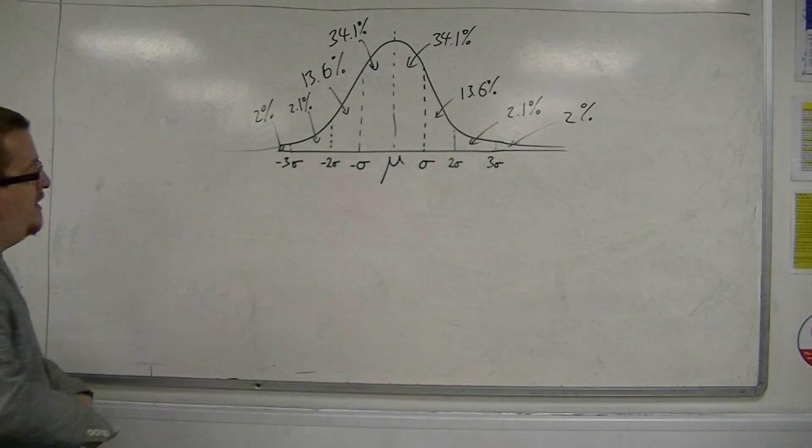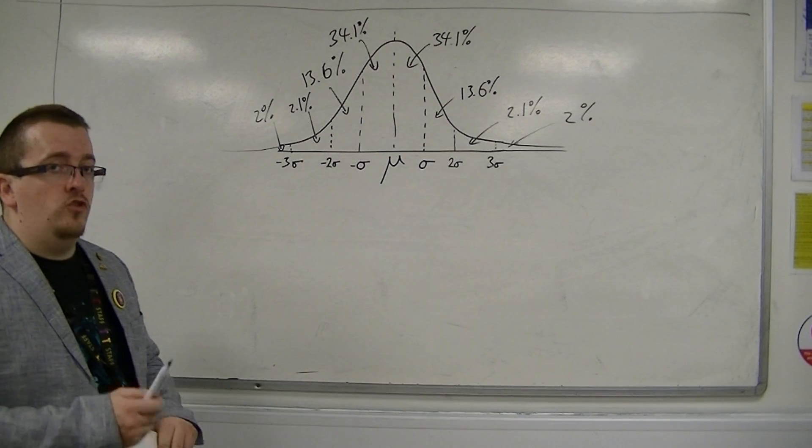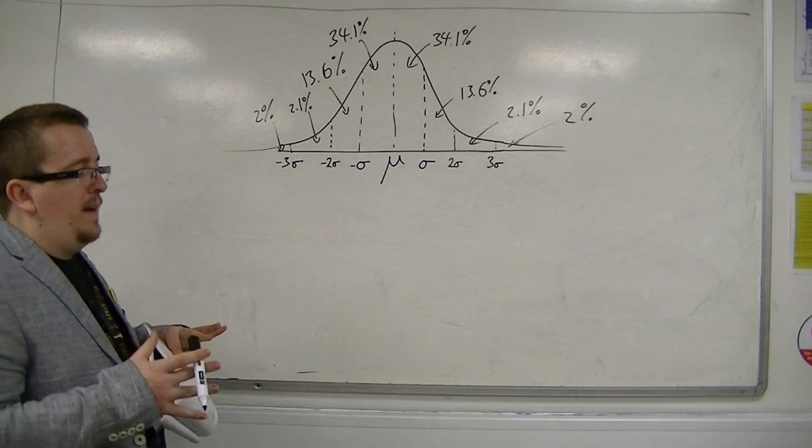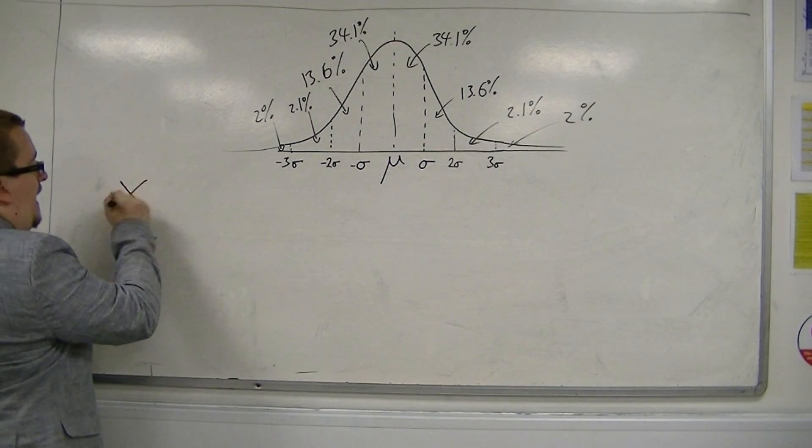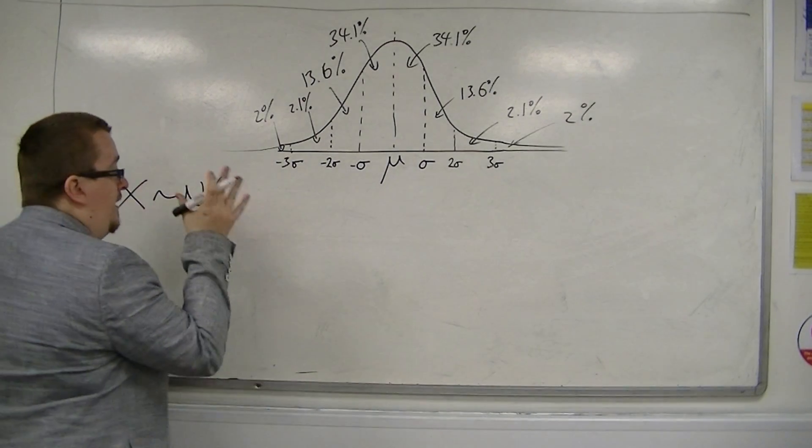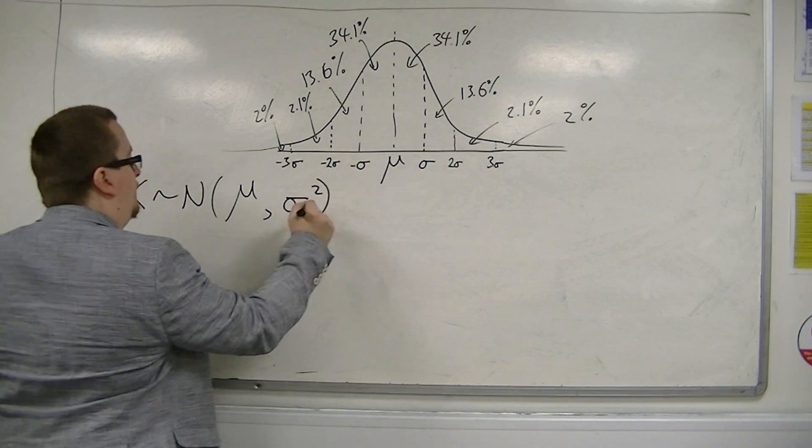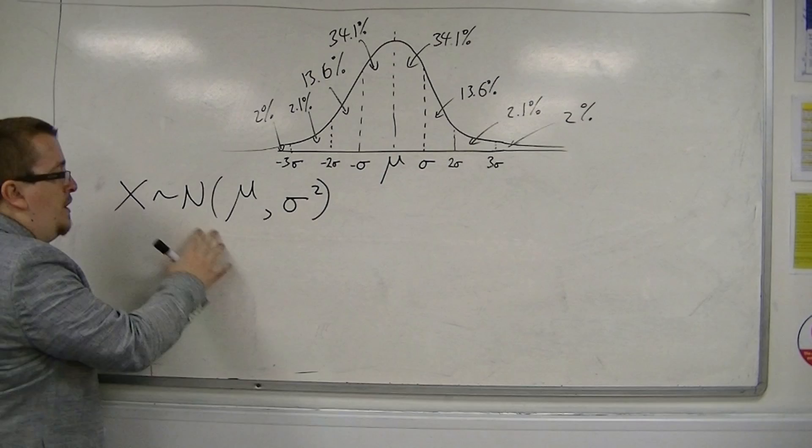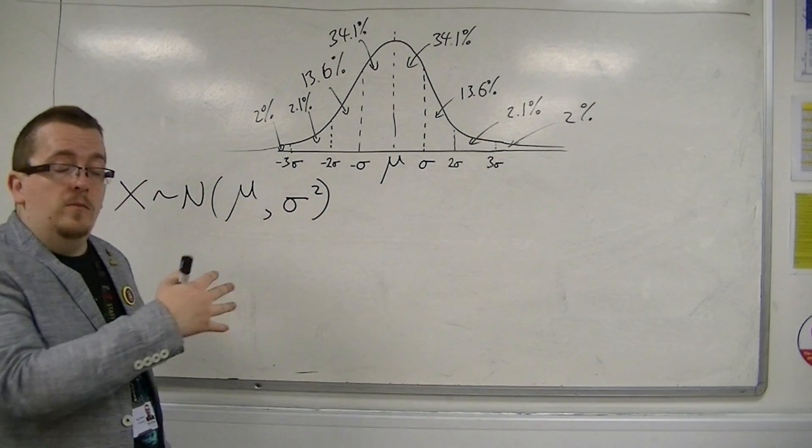What we're going to be using is known as the standardized normal distribution. Let me first explain that the normal distribution can be fully defined - x is normally distributed, and it can be defined by its mean and its variance. So it's written like this: x is normally distributed with a mean mu and a variance sigma squared.